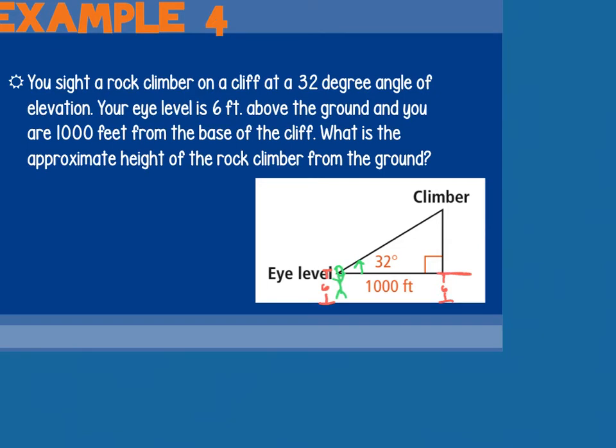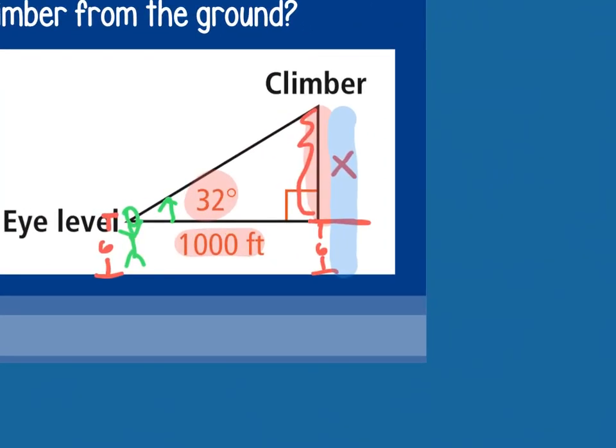So if I want to find, use the information I have, which is this angle, this side to find this side. Once I get this measurement, is it the distance from the ground to the climber? It's eye level to the climber. So what would I have to do with that when I'm done? So if I'm going to end up getting this measurement, but I want this whole thing, what am I going to have to do? If I gave you a segment and I cut it into two pieces like this and this, and I gave you this measurement and I said, this was six and I wanted the whole thing. What would you have to do? Add. Yes. I'm going to take what I get from this and add the six onto it. You with me?